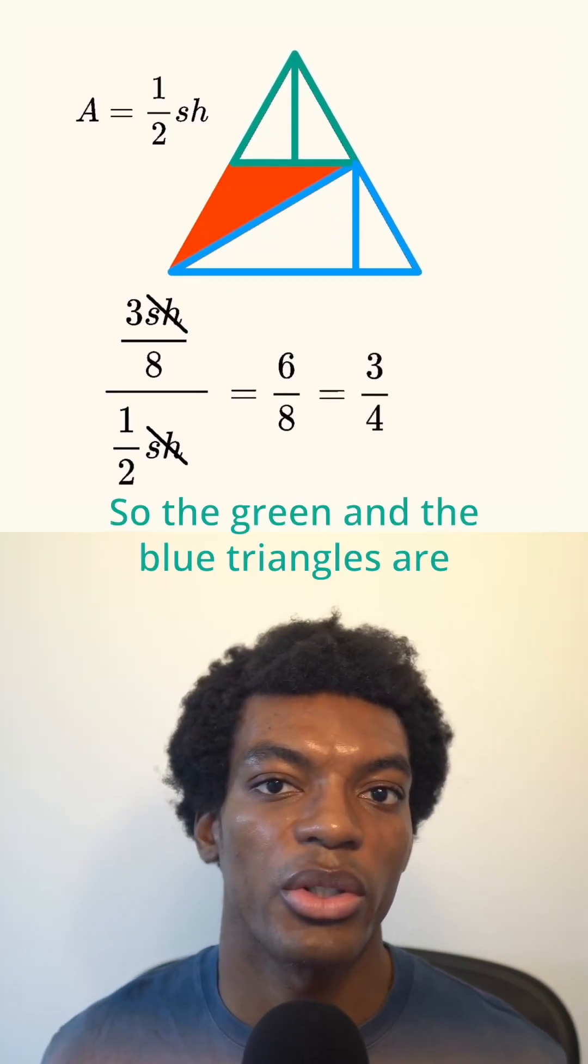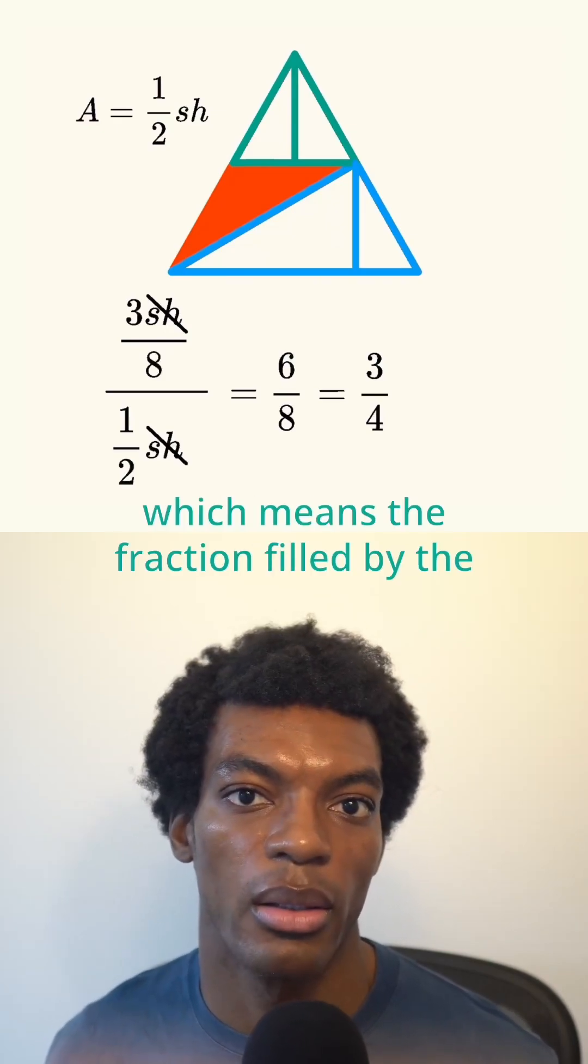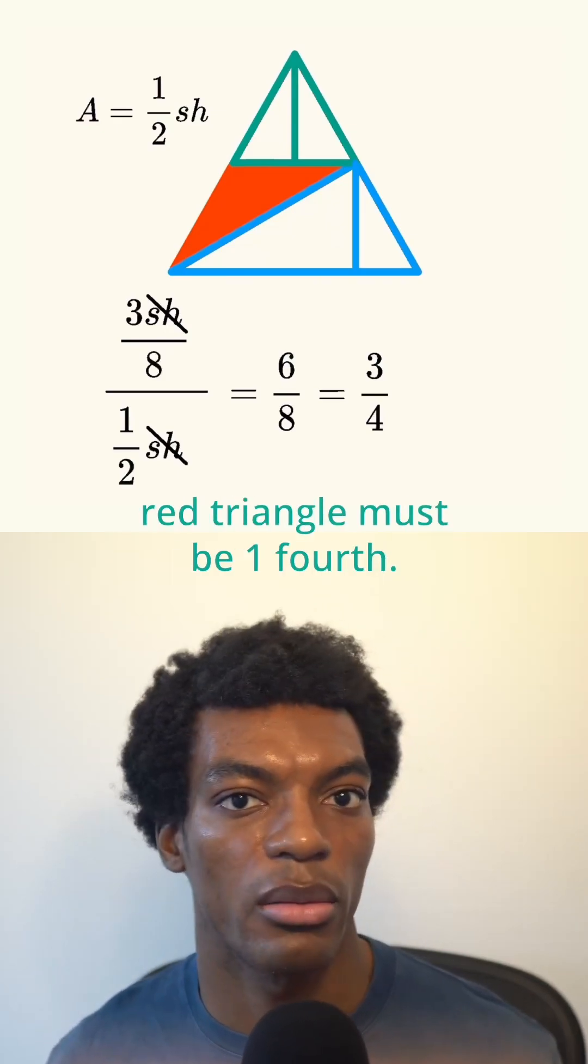So the green and the blue triangles are 3 quarters the area of the large triangle, which means the fraction filled by the red triangle must be 1 fourth.